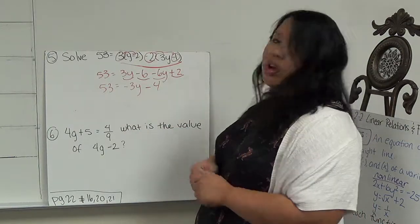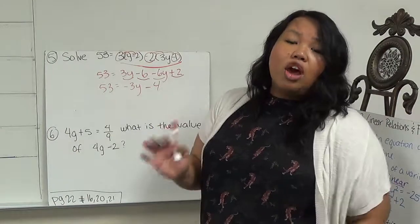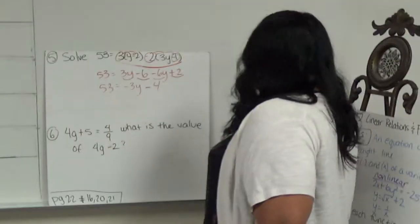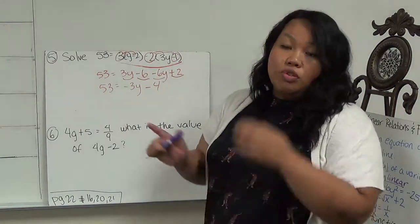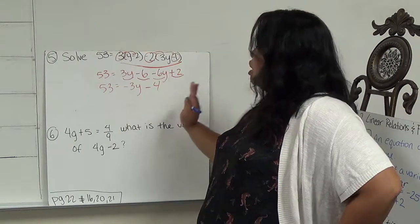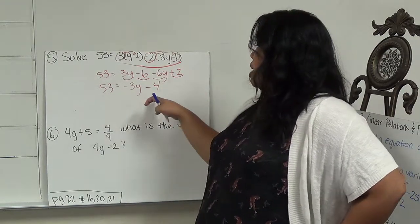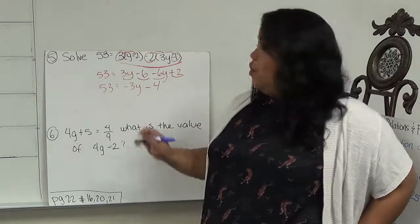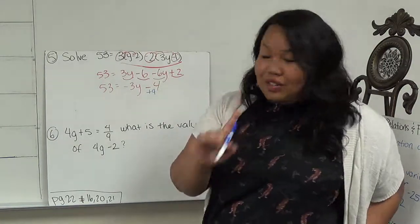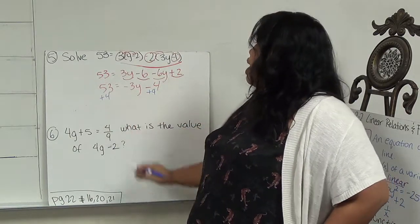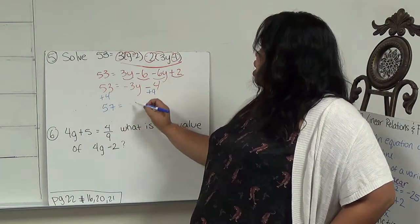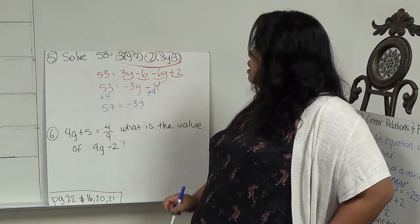So now this is the equation. I'm going to move from the furthest away on the same side of the equal sign from y. So because those are easier to move over. Right now, the furthest thing away from y, but on the same side of the equal sign. So it's not 53, but negative 4. And the opposite of a negative 4 is a positive 4. And what I do to one side, I have to do to the other. So I end up with 57 equals, this cancels out, negative 3y.